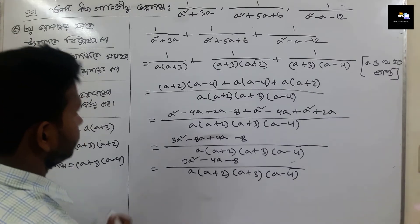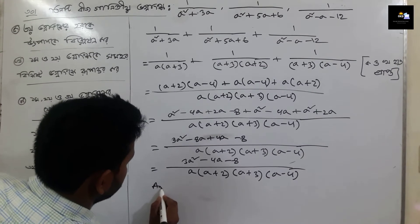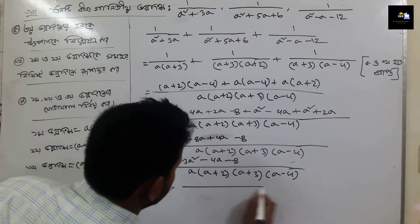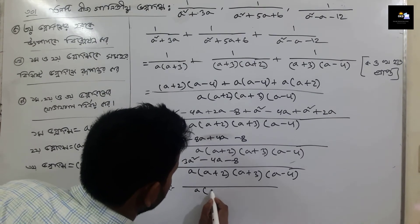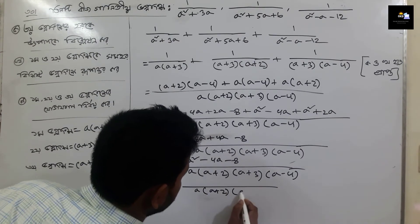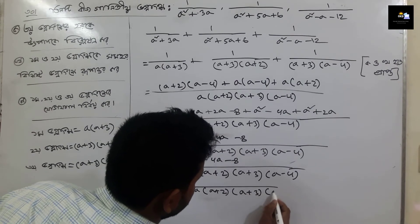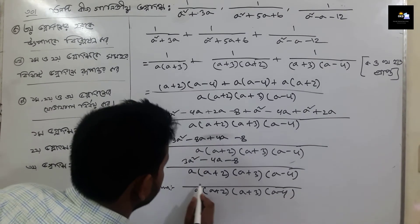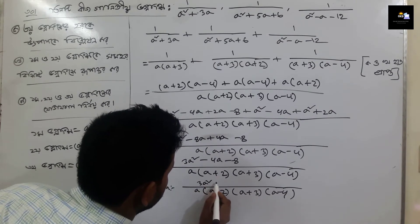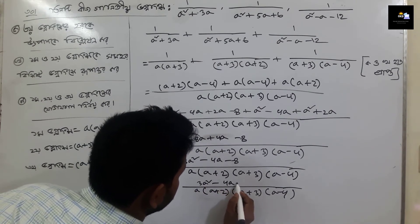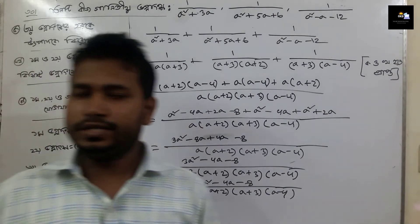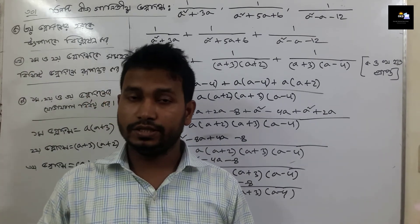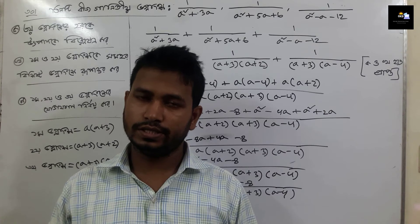We have a square and we have a minus 8, a minus 4, a minus 8. And we have the answer: a square. 1 to a square and 2 to a, plus 2a plus 3a, minus 4 and we have a minus 4a into a plus 2a.